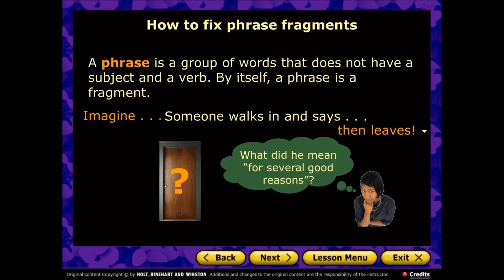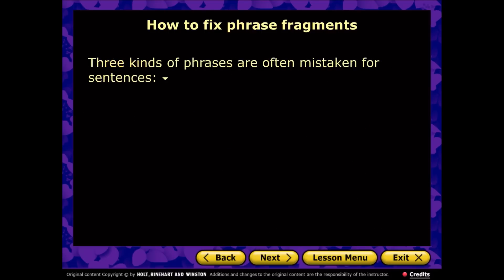We would need the young man to come back and give us the missing information. For example, he might say: 'For several good reasons, I am going to skip your class today, Mrs. Workman' — and of course in my mind there's never a good reason to skip class. Now let's look at the different kinds of phrases that are often mistaken for sentences in English.